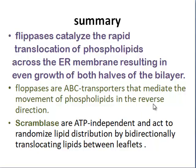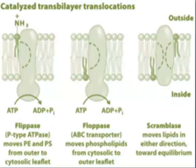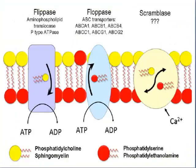That is all about flippases, floppases, and scramblases. You need to remember the examples: P-type ATPases are flippases, and ABC transporters come under floppases. Remember the phospholipids transported by flippases, floppases, and scramblases. Scramblases also require calcium ions. That is it — thank you.